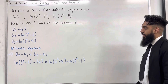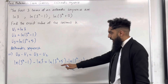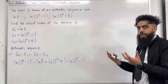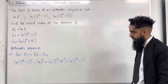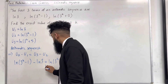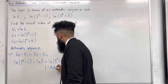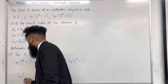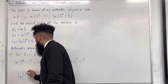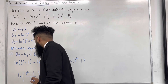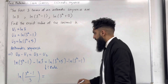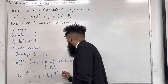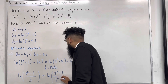Now I can use rules for natural logs. On both sides I'm subtracting, so I can apply the division law for natural logs to combine them. This gives ln((3 to the power k minus 1) over 3) equals ln((3 to the power k plus 5) over (3 to the power k minus 1)).